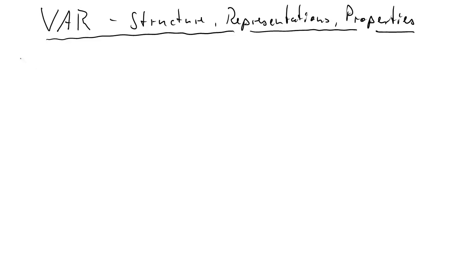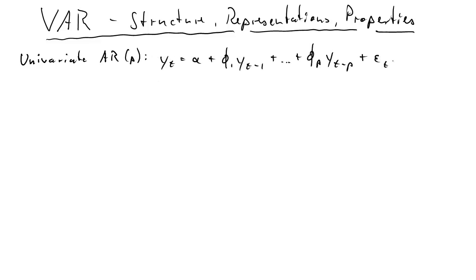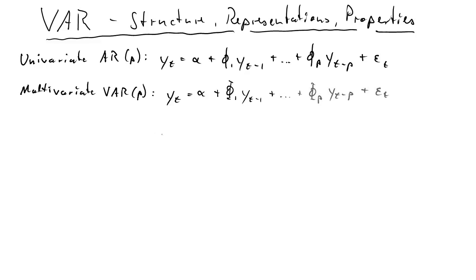In this clip we're going to talk about the structure, representations, and properties of vector autoregressive processes. We already know univariate AR processes — not vector AR but univariate AR. Let's state one here to remind ourselves: an AR(P) process where yt is a function of yt-1 all the way up to yt-p. Now if we have a multivariate vector autoregressive process, it will look very similar, except we call the coefficients to the lags capital phi's, and behind the yt's and their lags we really have vectors.